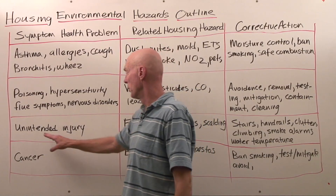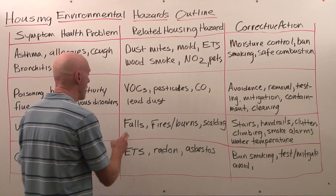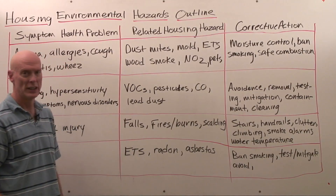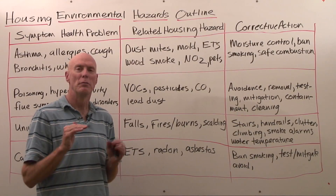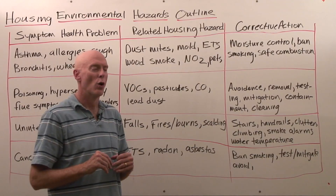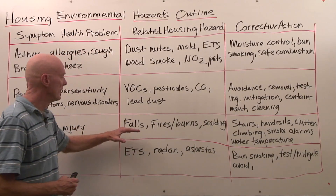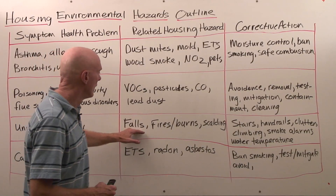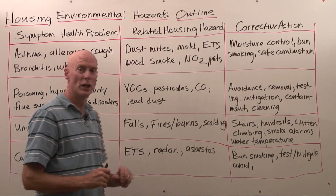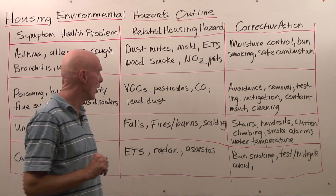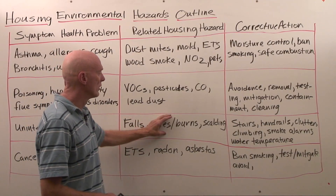Unintended injuries are a very important cause of physical harm in the home. The most common unintended injury is falls. Just being aware of how we injure ourselves is one of the leading ways we can avoid injury — being aware that when we climb on something or walk through a cluttered hallway, we are risking life and limb. The leading cause of death and injury in homes is falls. Also important are fires and burns, and scalding.